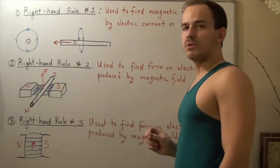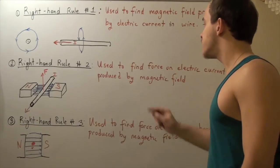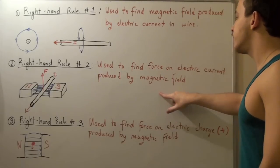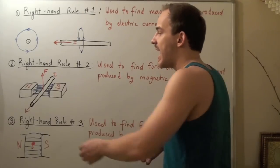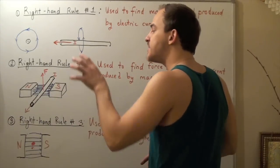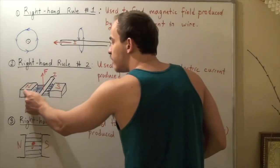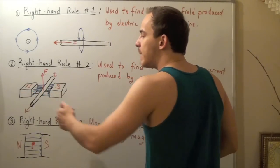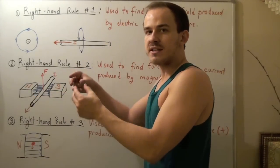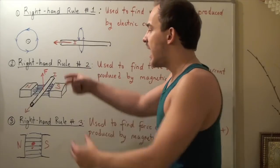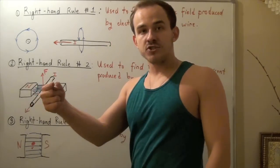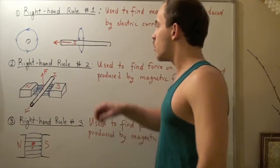Let's look at right-hand rule number two. This right-hand rule is used to find the direction of the force on electric current produced by a magnetic field. Remember, any magnet will produce a force on a wire that's carrying a current if that current is placed into that field. Suppose we have a magnet with north to south poles, so our magnetic field lines are pointing this way and they are straight. Now suppose we take a wire carrying a current going out of the page and place it into our magnetic field.